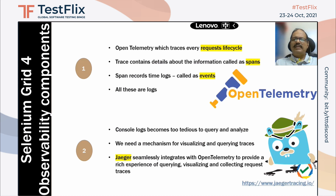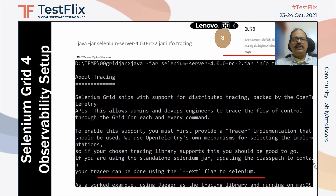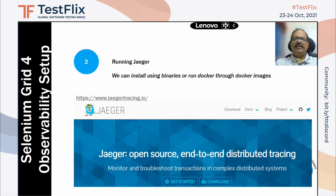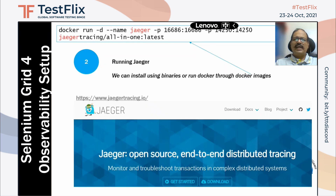In setting up things for observability, we need OpenTelemetry, which is already part of the Selenium Grid code. We need Jaeger, which is basically going to take all these event logs and put them into a graphical or visualization format. And third is Coursier, which is a Maven library or dependency fetcher that allows us to run certain telemetry jar files.